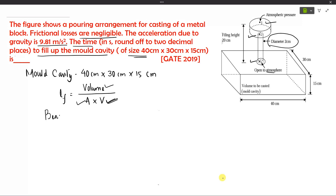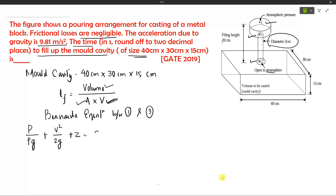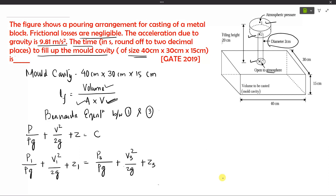Writing Bernoulli's equation between section one and section three: the general formula is p/ρg + v²/2g + z = constant. Applying this for sections one and three: p1/ρg + v1²/2g + z1 = p3/ρg + v3²/2g + z3. Now we extract data from the given diagram.